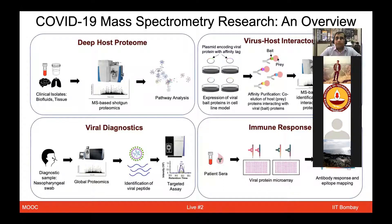Mass spectrometers have made a huge impact in various types of applications. Think about cancer, think about infectious diseases. These recent technologies have started identifying novel targets, understanding disease mechanisms, and in many cases even potential biomarkers. Given that mass spectrometry is a very large topic, and in the course you are already studying about the nuts and bolts of different technologies, we thought to give you the flavor of these technologies directly from the lab by taking one case study on COVID-19.